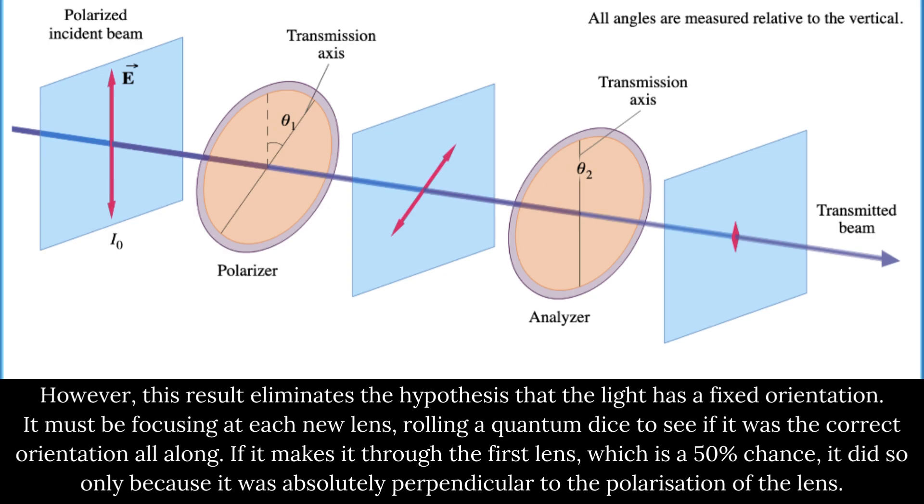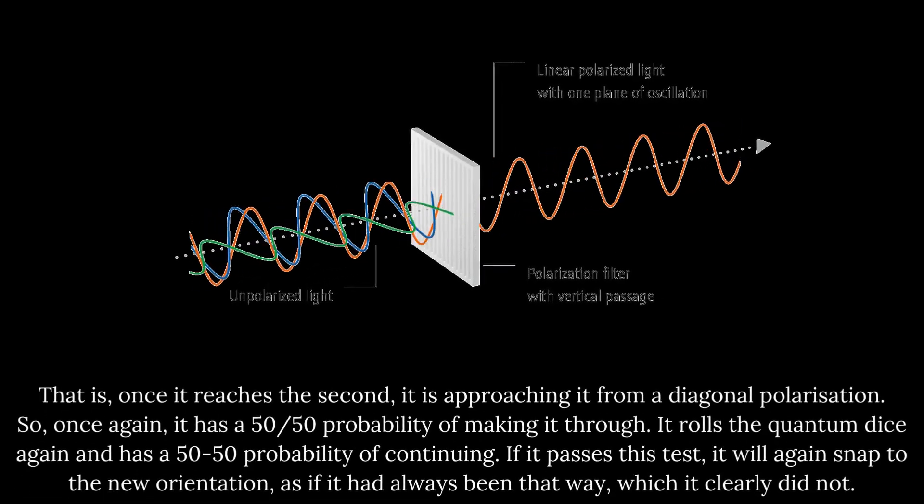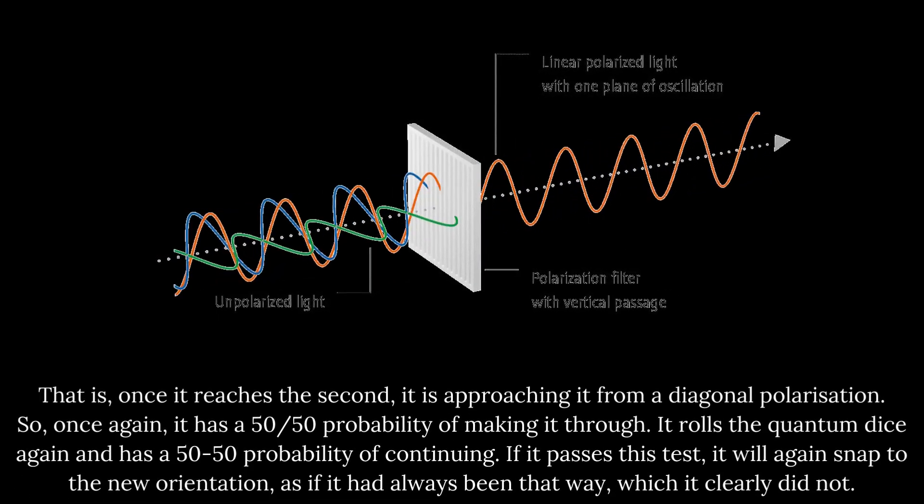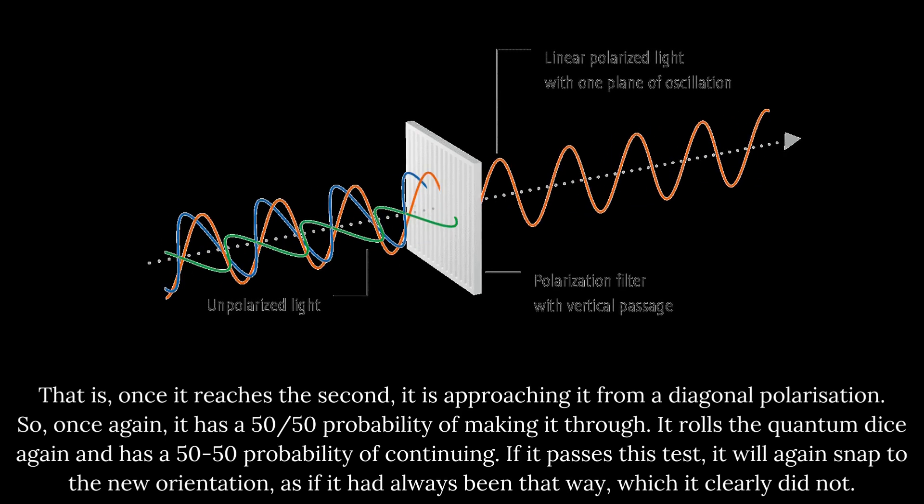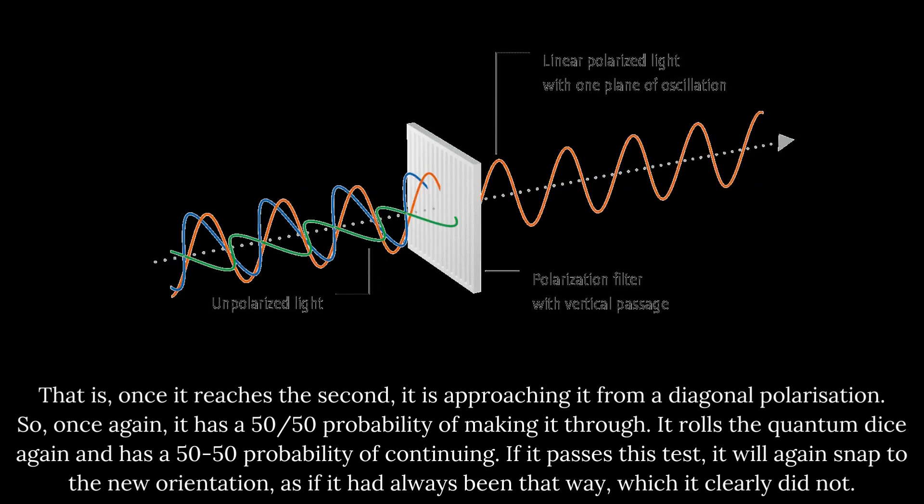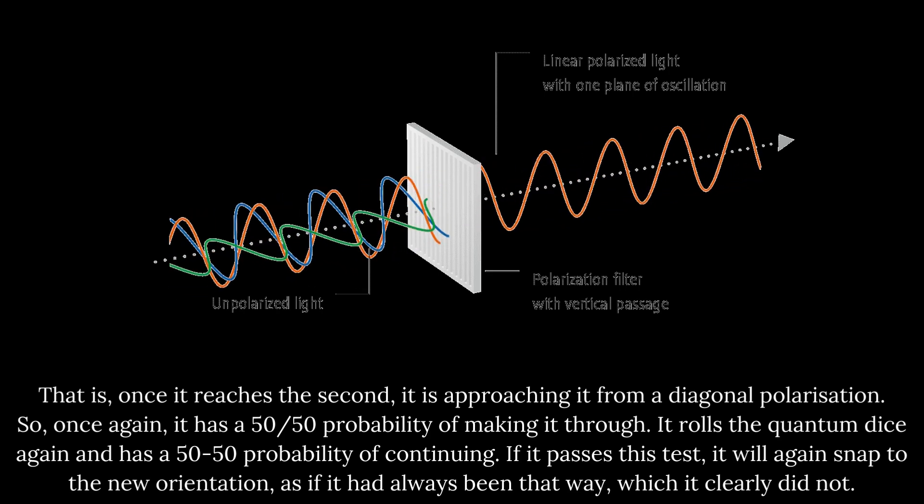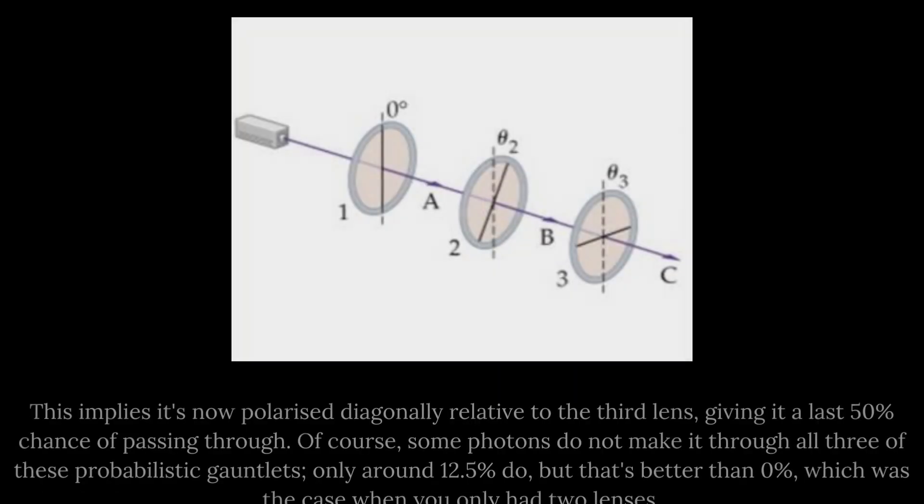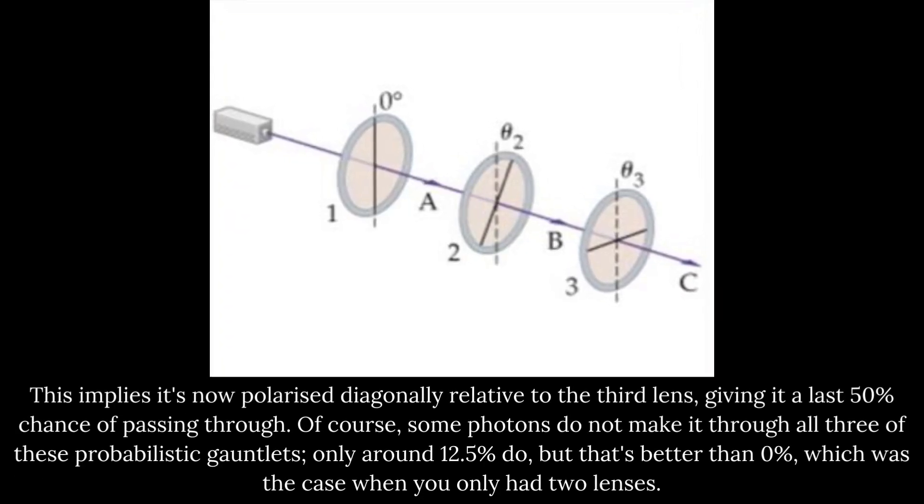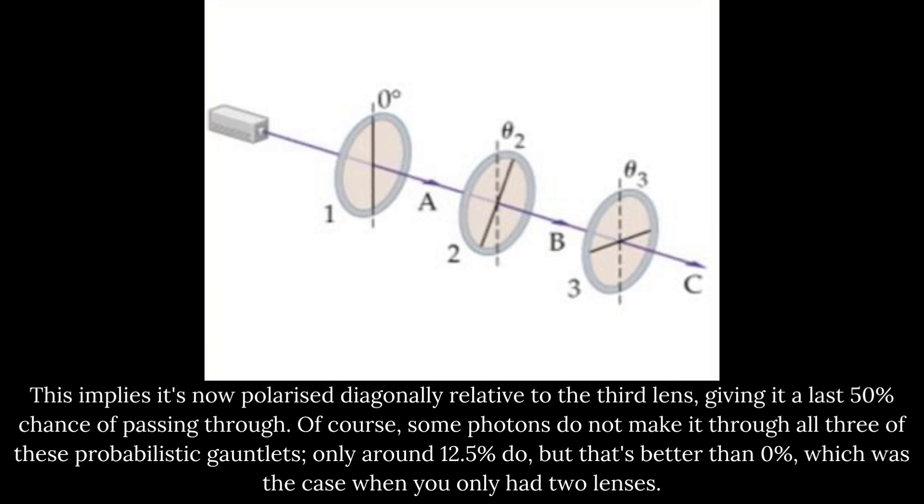If it makes it through the first lens, which is a 50% chance, it did so only because it was absolutely perpendicular to the polarization of the lens. That is, once it reaches the second, it is approaching it from a diagonal polarization. So once again, it has a 50-50 probability of making it through. It rolls the quantum dice again and has a 50-50 probability of continuing. If it passes this test, it will again snap to the new orientation, as if it had always been that way, which it clearly did not. This implies it's now polarized diagonally relative to the third lens, giving it a last 50% chance of passing through.